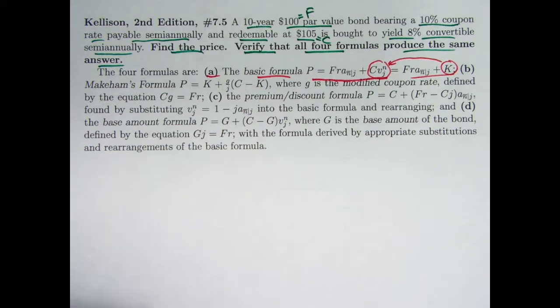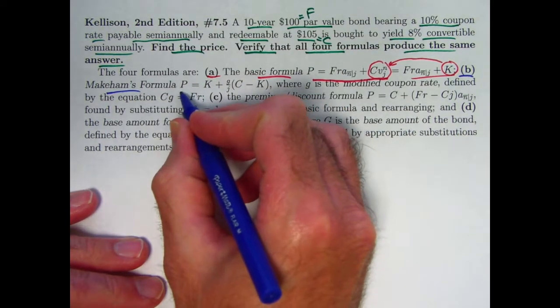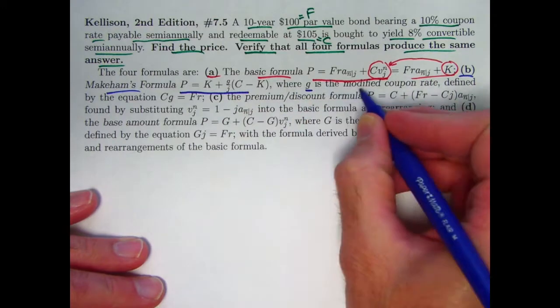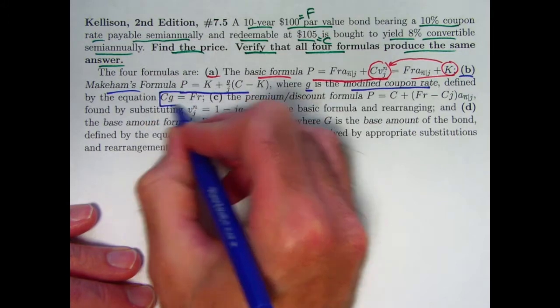We can also write it this way where we define K to equal this present value right there. So that's the basic formula. Think about that in terms of timelines. Again, recently we've talked about something called Makeham's formula. It's our second formula. We can write it this way. We introduced little g, the modified coupon rate, in the last video, video number 100. It's defined by this equation.